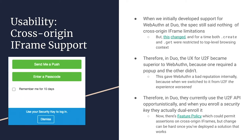The solution was to dual-enroll credentials as both WebAuthn and U2F credentials — a hack, but it works and provides a better user experience. Now this is no longer necessary because due to recent changes and support for a feature policy, it's now possible to permit assertions through cross-origin iframes. But as many of you are aware — once you've deployed a solution that works, why change it?